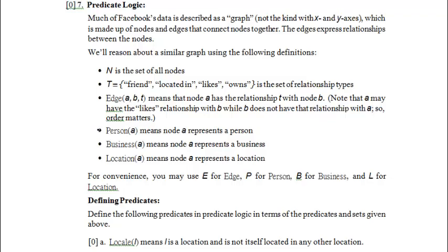Person(A) means node A represents a person. Business(A) means A is a business. Location(A) means A is a location. For convenience, we can use E for Edge, P for Person, B for Business, and L for Location. That'll make everything a lot shorter, except for the relationship names: friend, located in, likes, and owns.